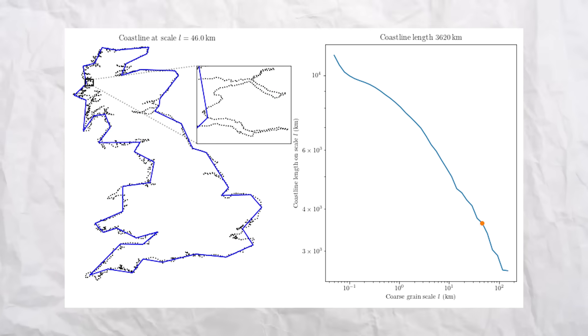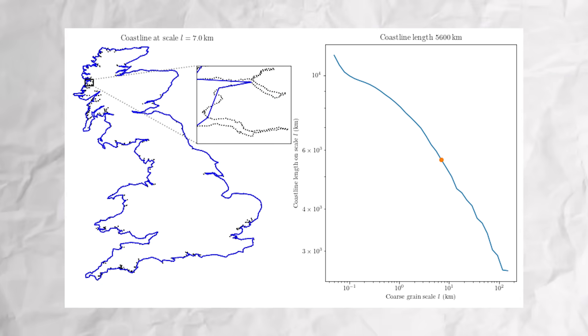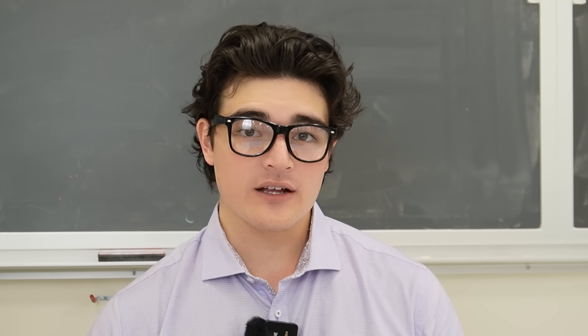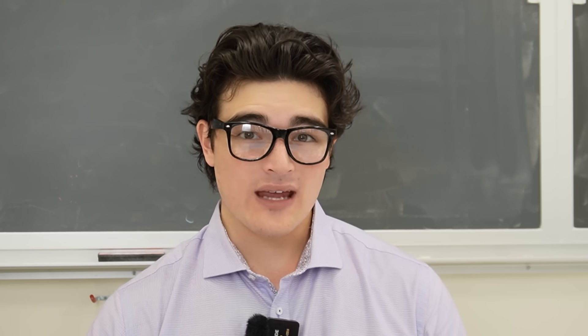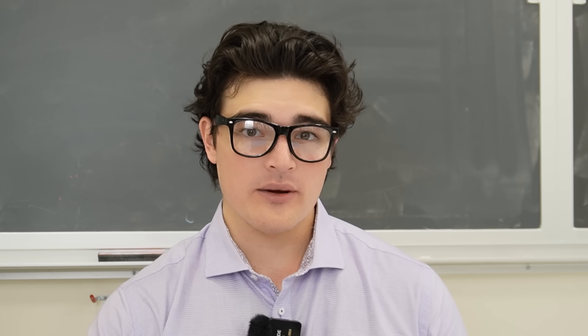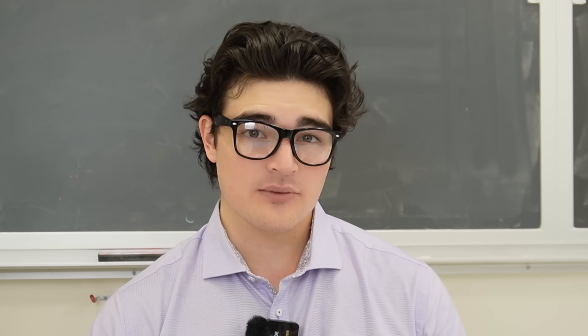And we can actually see this happening when we look at Britain. As we increase the accuracy of our measure, we can see the length of the coastline getting larger and larger. So while physical limitations stop it from being infinitely long, using the concept of fractals, we actually get to an infinitely long perimeter, not just an infinitely long decimal expansion.